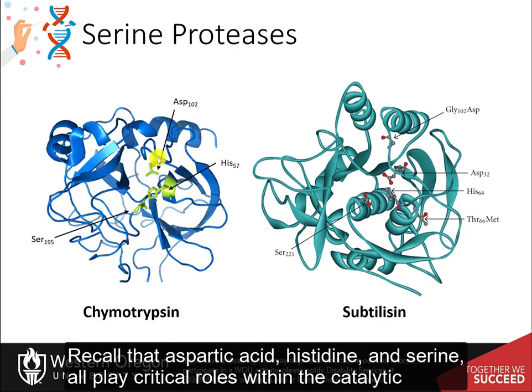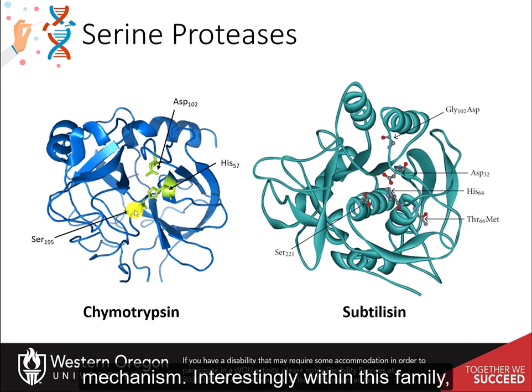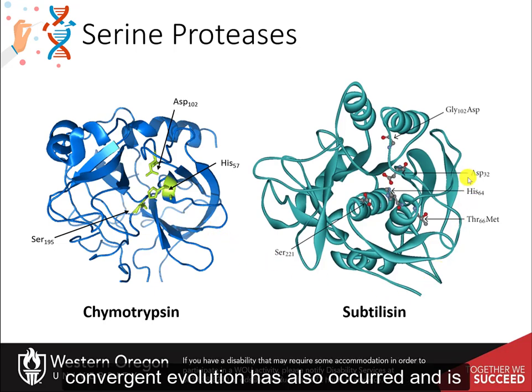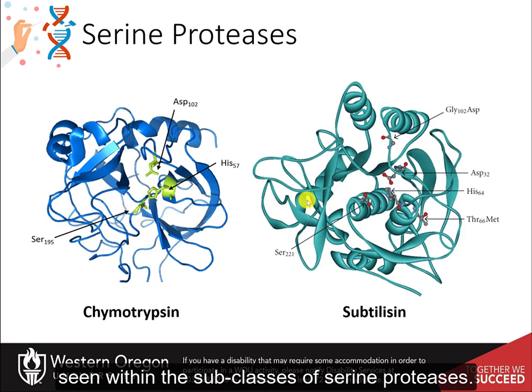Recall that aspartic acid, histidine, and serine all play critical roles within the catalytic mechanism. Interestingly, within this family, some members are true homologues arising through the same ancestral lineage. However, convergent evolution has also occurred and is seen within the subclasses of serine proteases.